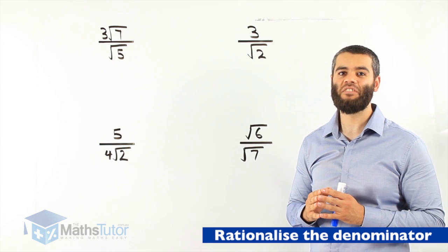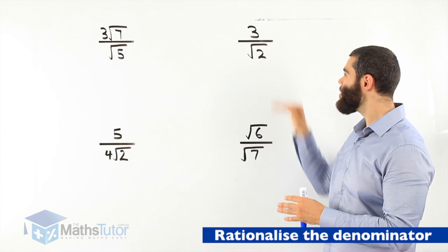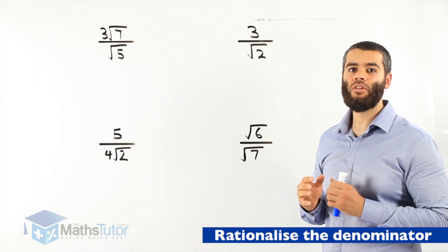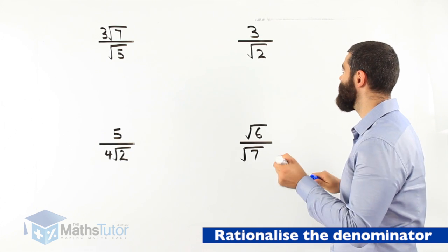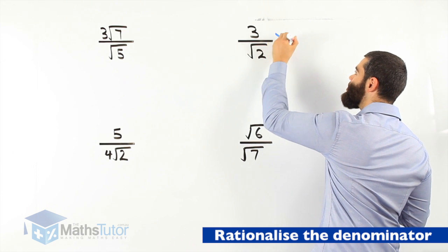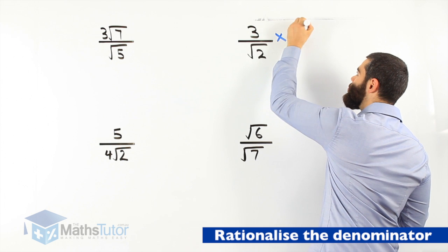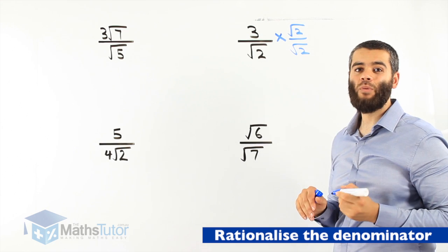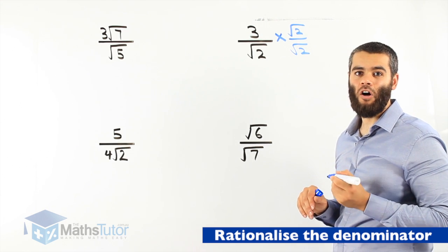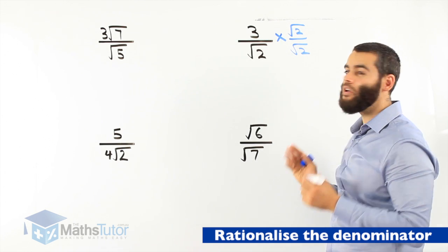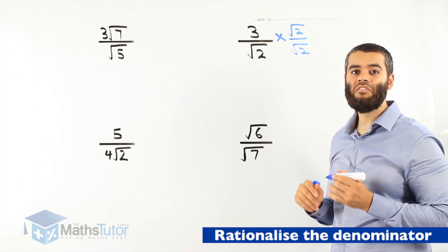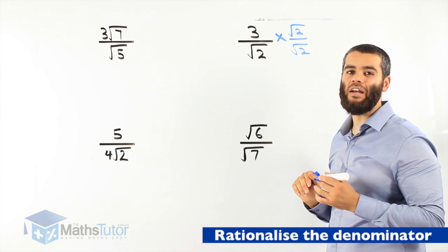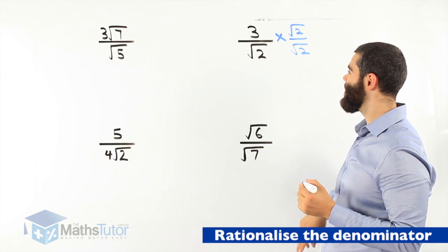I'm going to show you today how it's done. Looking at the first one, the question says rationalize the denominator. How do we do that? Simple — we multiply by root 2 over root 2. We're actually multiplying by one whole, because root 2 over root 2 is one whole. It's just a process that we do to rationalize the denominator and make sure the denominator is rational.